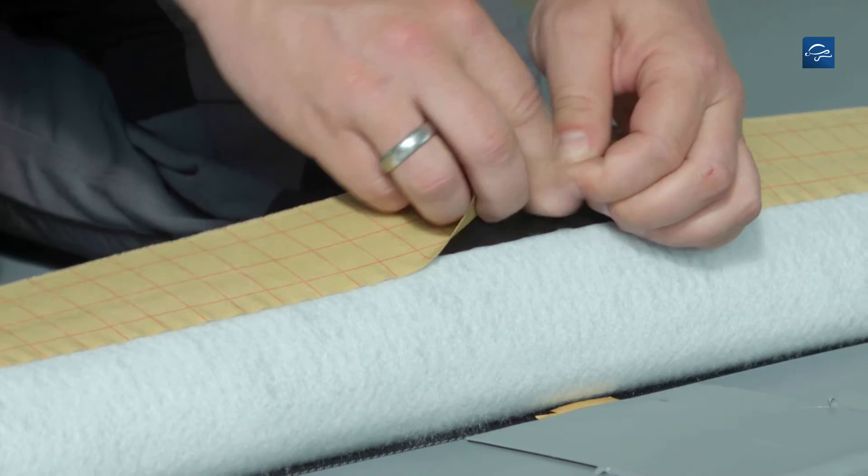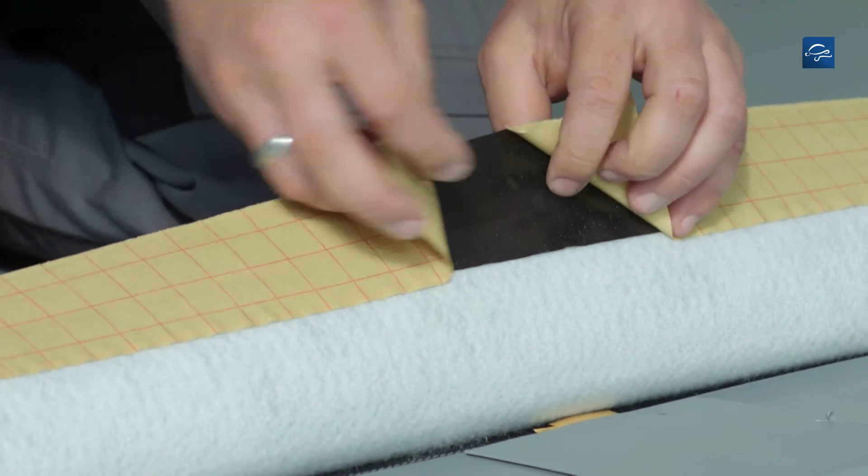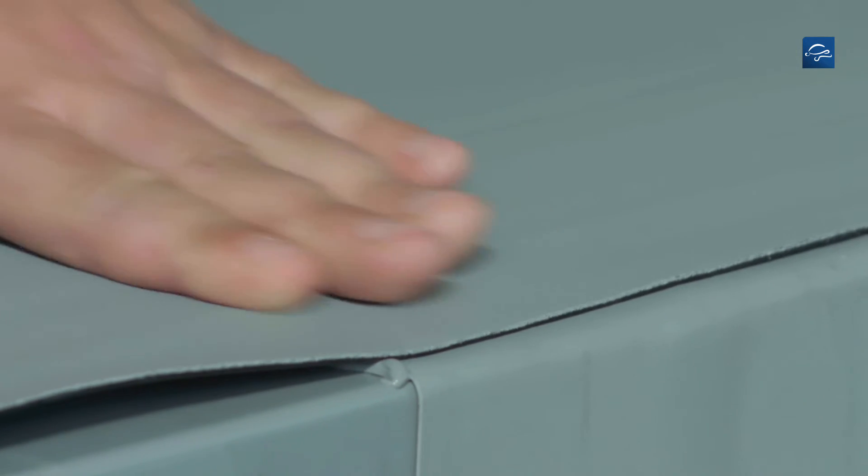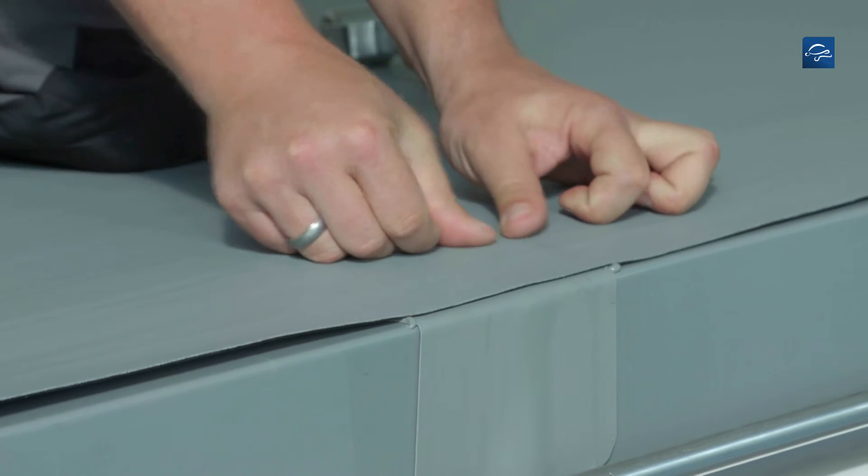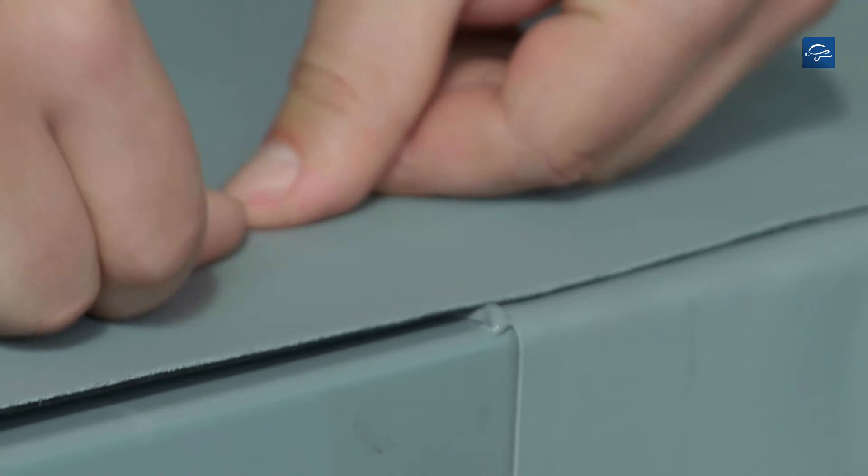Remove the release film from the self-sealing edge and press the membrane onto the coated metal sheet. Press on the areas left and right of the beads.